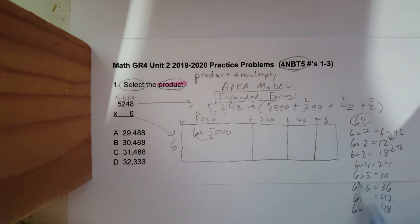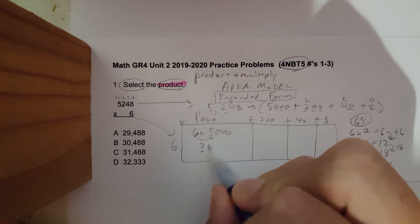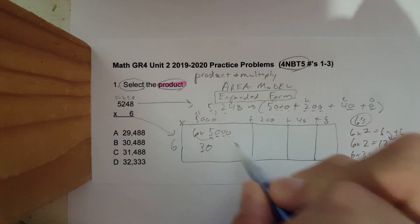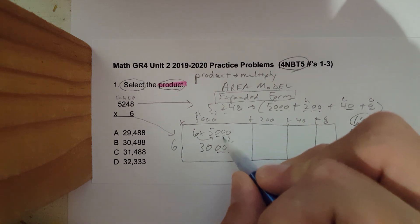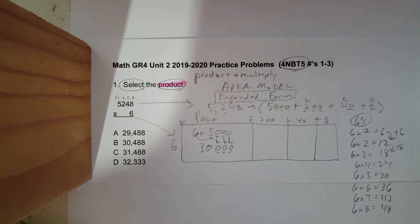And here's why I like area model: it breaks it down to two digits. You are just going to multiply six times five. We know that six times five is 30, so I will write 30 here, and then I have one, two, three zeros. One, two, three zeros. Please make sure you double check and get those zeros in there.